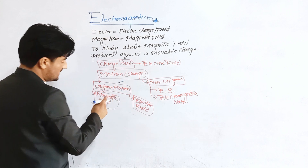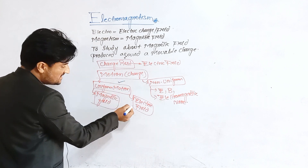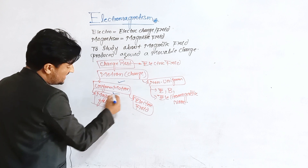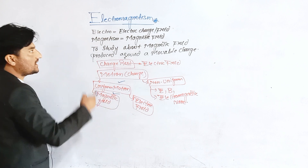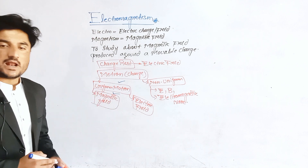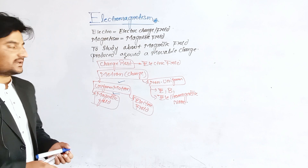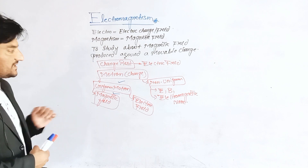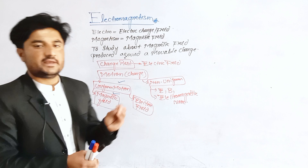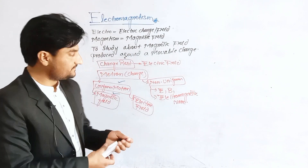So in this chapter, we have to study the magnetic field that is produced due to the motion of a charge in uniform motion — that is what electromagnetism covers. Now, for this, let us do a simple activity.